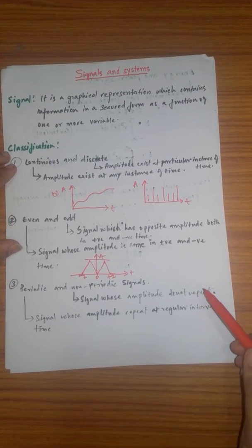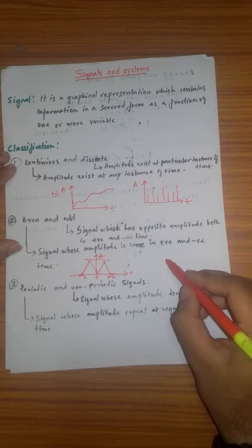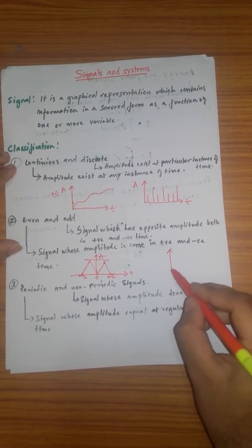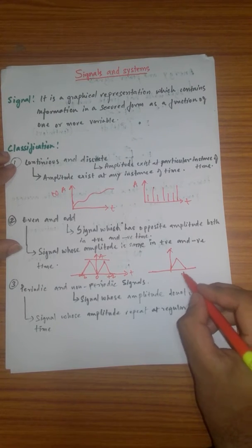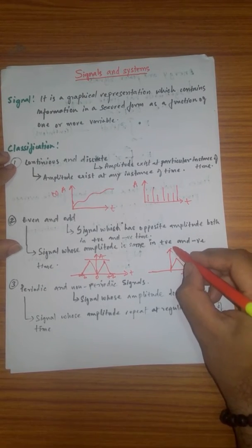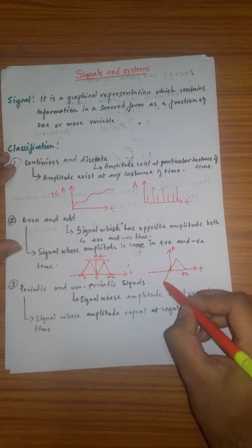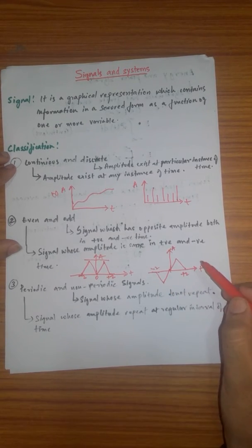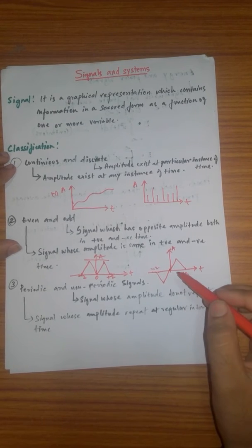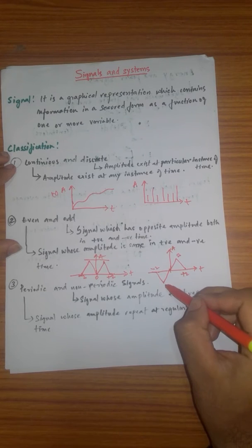For an odd signal, we have a signal which has opposite amplitude on both the positive and negative time sides. If this is the signal on the positive side of time with a certain amplitude, then in the negative interval the signal will be inverted — if it is 2, then it is minus 2. This is known as an odd signal.